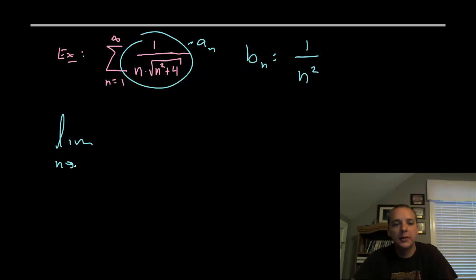Take the limit as n approaches infinity. Just to save a little time, if y'all don't mind, I'm going to go ahead and take reciprocals. You get n squared over n times the square root of n squared plus four. One of these factors of n will cancel.